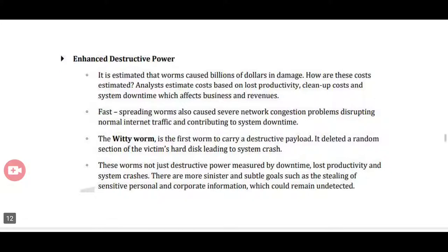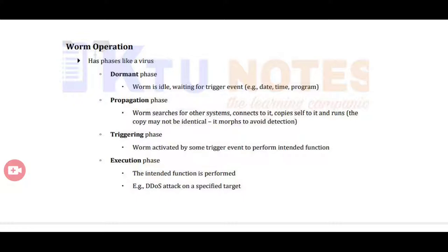A worm's operation has four phases, like a virus: dormant phase, propagation phase, triggering phase, and execution phase. In the dormant phase, the worm is idle and waiting for a trigger event. In the propagation phase, the worm searches for other systems, connects to them, copies itself, and runs. In the triggering phase, the worm is activated by some trigger event such as a date or time. In the execution phase, the intended function is performed, like a denial-of-service attack.